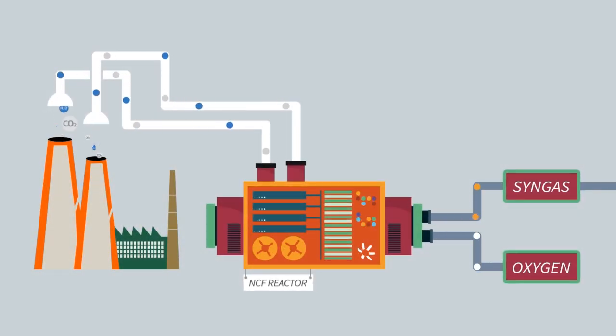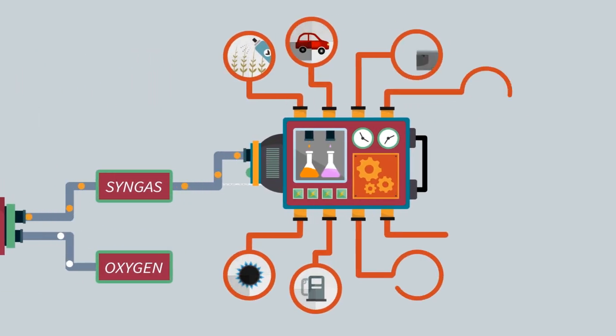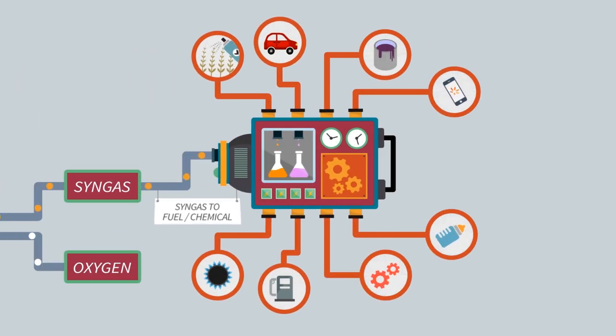CO2 and water are emitted by large facilities and captured by the NCF reactor. NCF's groundbreaking technology transforms CO2 and water into two separate streams. The first one is the mixture between CO and hydrogen, better known as syngas, and the second stream is pure oxygen.